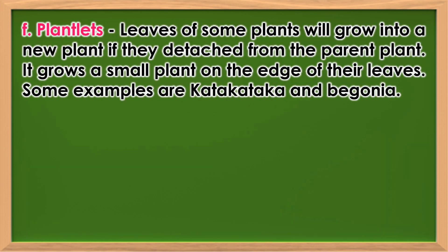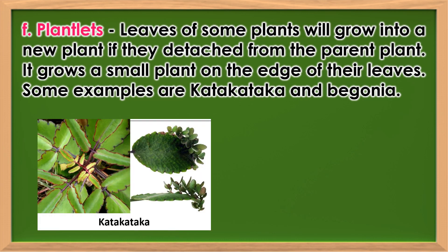Plantlets from Leaves: Leaves of some plants will grow into a new plant if they detach from the parent plant. They grow small plants on the edge of their leaves. Some examples are katakataka and begonia.